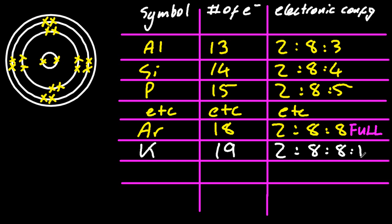So we have to start on the fourth shell for potassium. And finally, calcium with 20 electrons, 2-8-8-2.